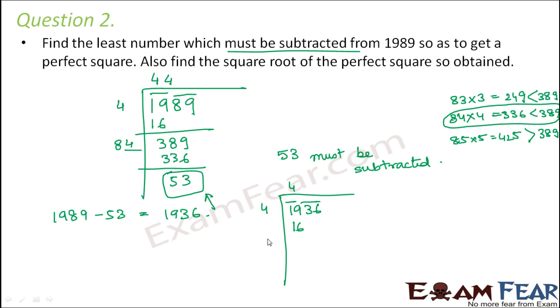If you want we can do it once again just to show you. So again here 4 times 4 is 16. So remainder is 3. But this time the next set of digits is 36. So you have 336 here. So here the divisor would still be 8. The blank would be filled by 4. So 84 into 4 is 336. So your final remainder is 0. Therefore square root of 1936 is equal to 44.